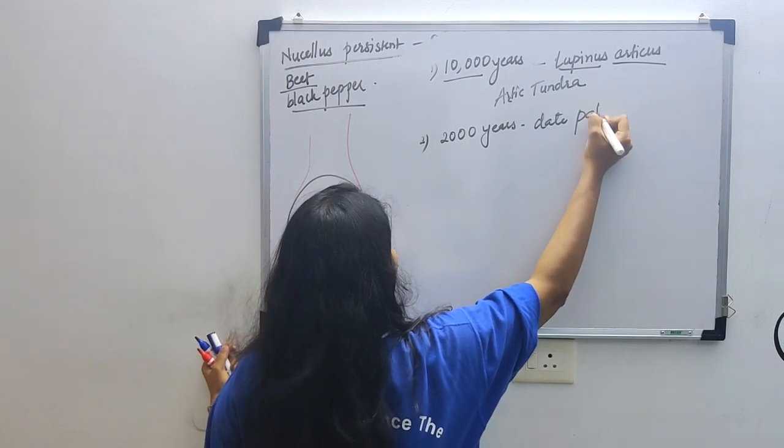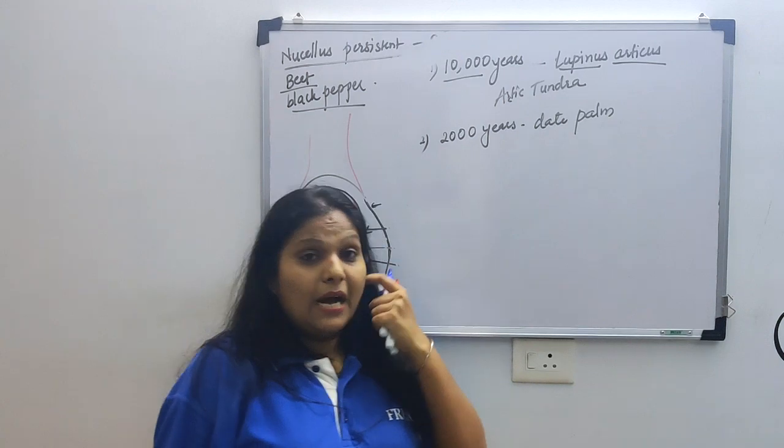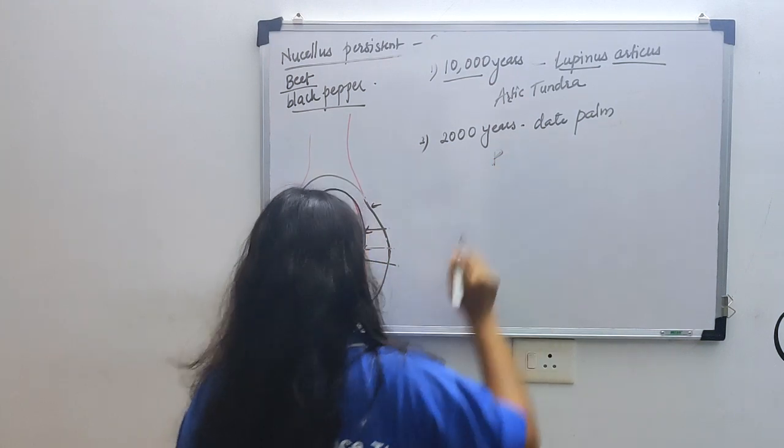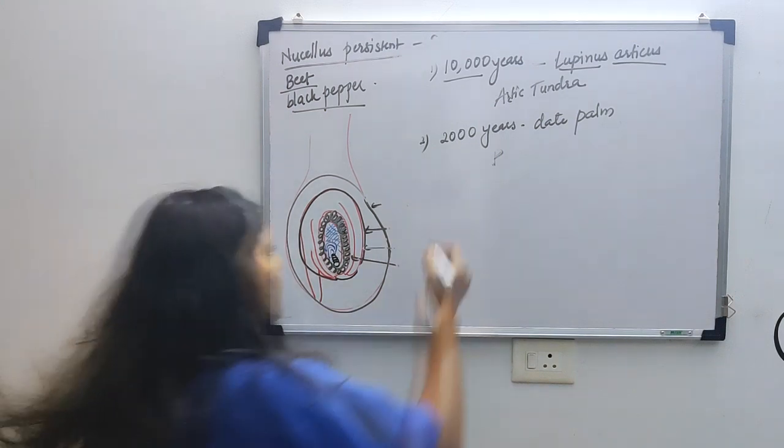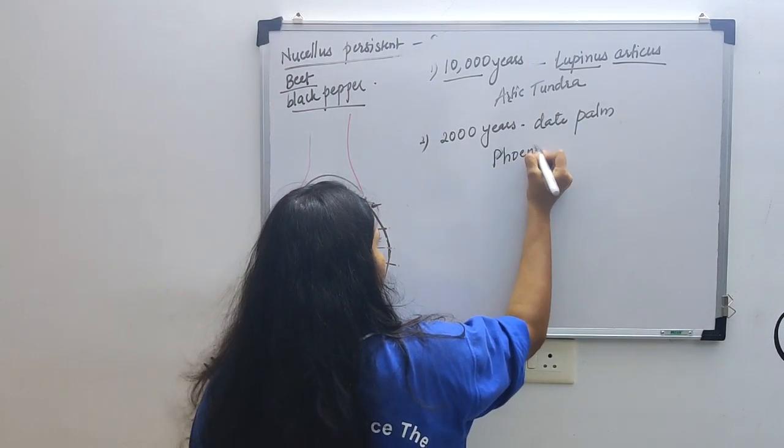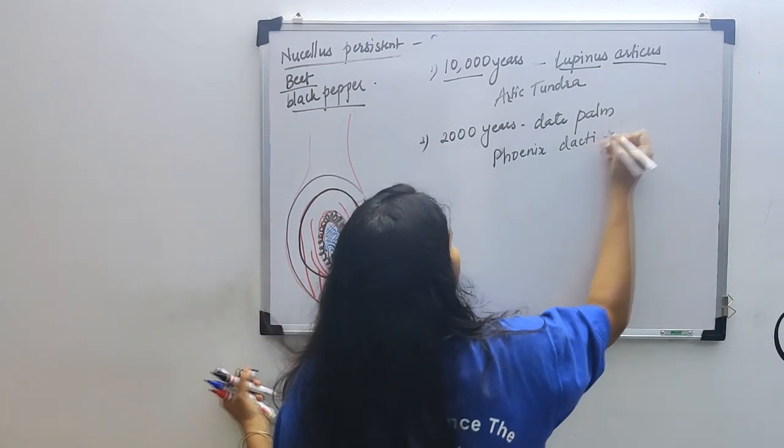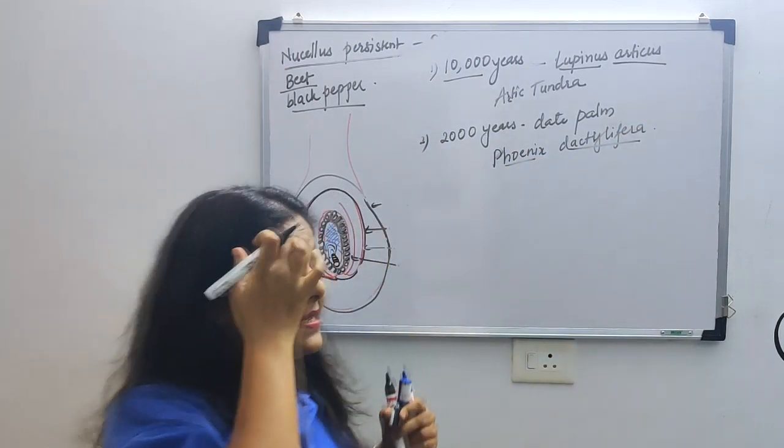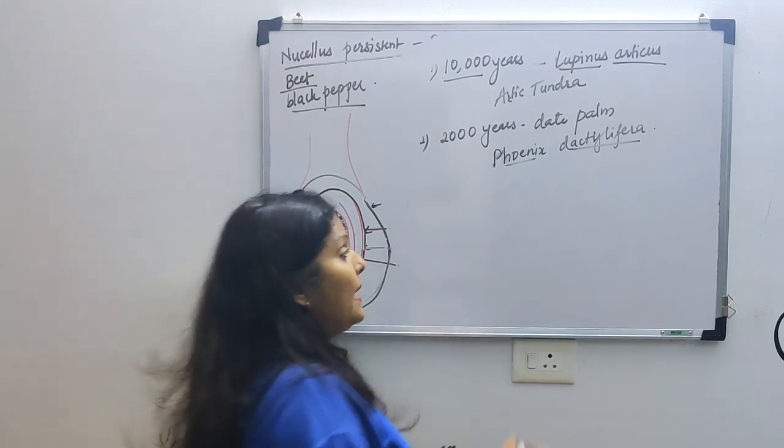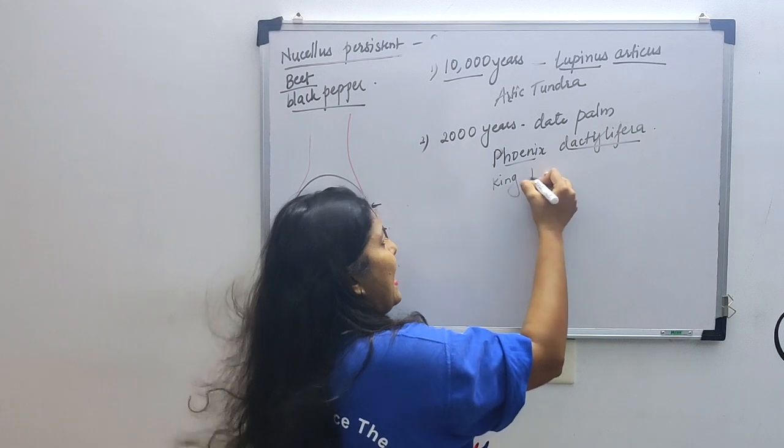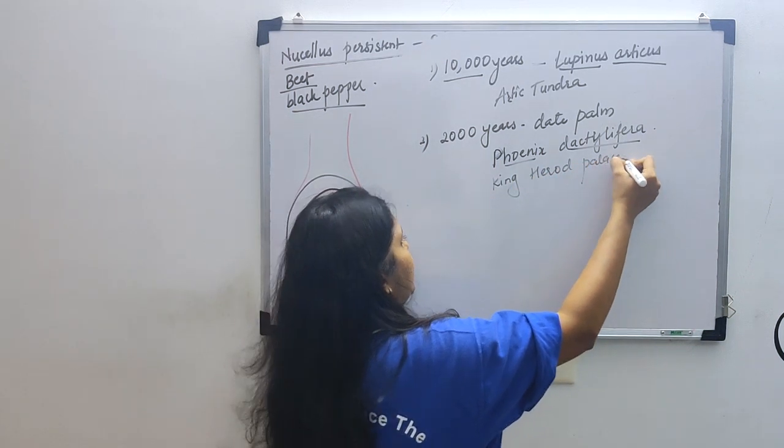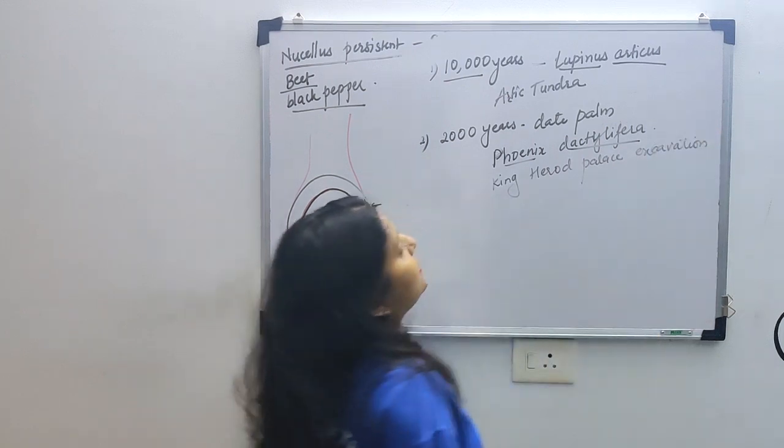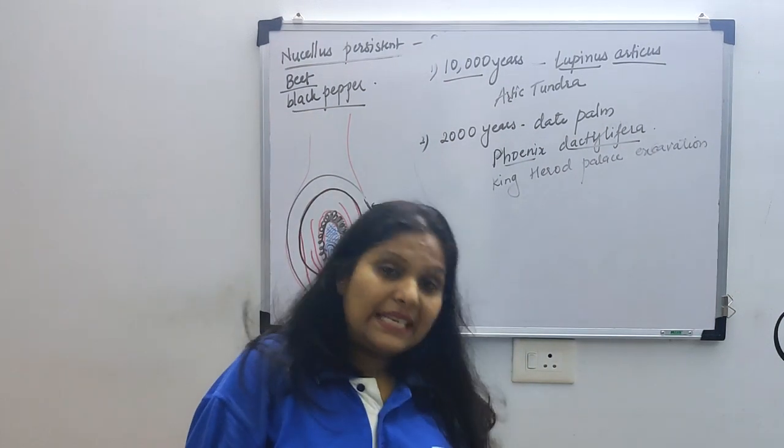The next seed that we are going to talk about is recently found and is approximately 2,000 years old. This is an example of date palm. Date palm is our Phoenix dactylifera. Phoenix dactylifera is the name of the plant whose seed is 2,000 years old. In fact, it was found when King Herod's palace was excavated. So when there was an excavation in King Herod's palace, this Phoenix dactylifera was found.